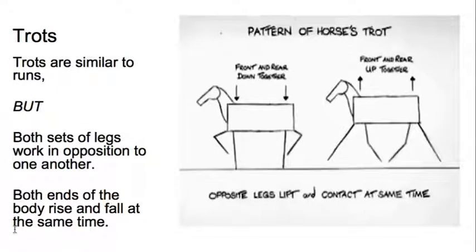Trots are similar to walks, but unlike a walk where you have a rocking motion—which is to say the bum goes up as the shoulders go down and the shoulders go up as the bum goes down—with a trot, both parts of the body work in sync with each other. So the front and the rear go up together, and then the front and the rear go down together.